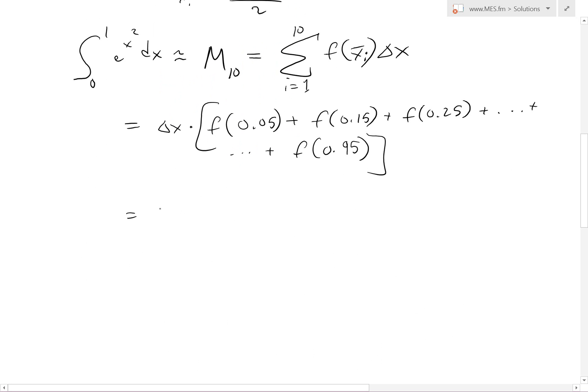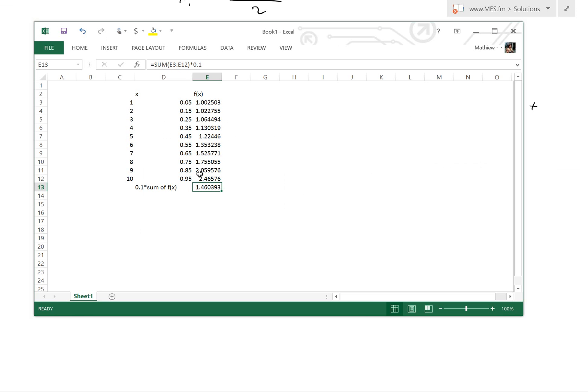One is the highest. And that's this last one right here. This is x 10 bar equals point nine five. So we have this. Now we just add these up. Delta x is point one times e to the point zero five squared plus e to the point one five squared plus e to the point two five squared, keep going on and on, plus e to the point nine five squared. And now when you plug this into the calculator, or in this case here, I just made a quick Excel sheet.